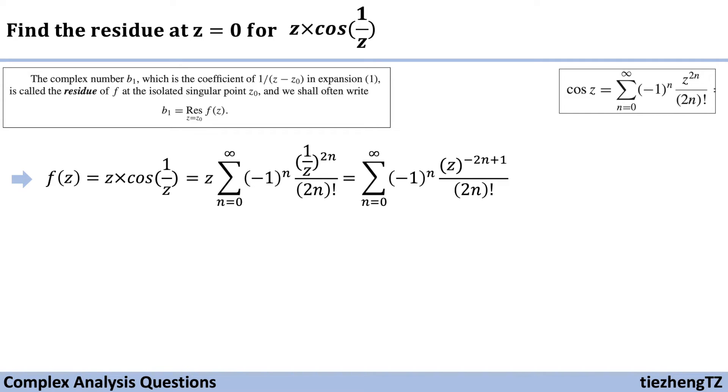So now we have f(z) equals z times sum n starts from 0 to infinite minus 1 to the power of n times 1 over z to the power of 2n over 2n factorial. And when we move z within the sum, we have sum n starts from 0 to infinite minus 1 to the power of n times z to the power of minus 2n plus 1 over 2n factorial.